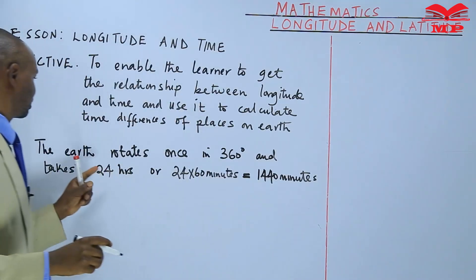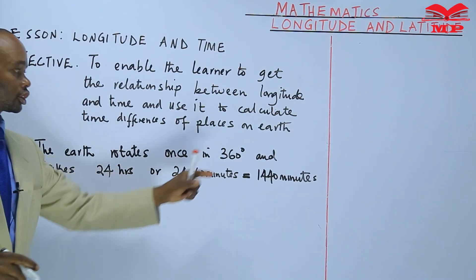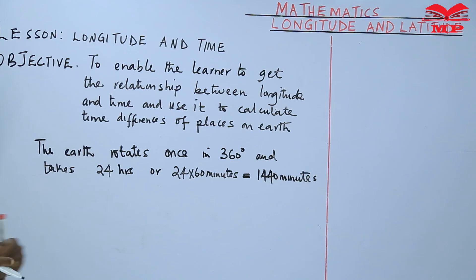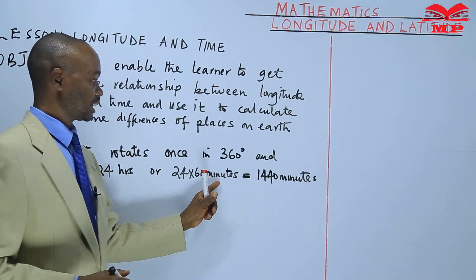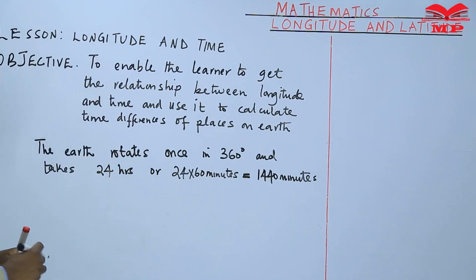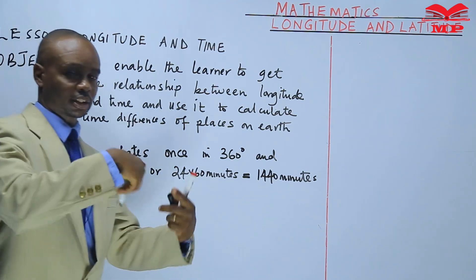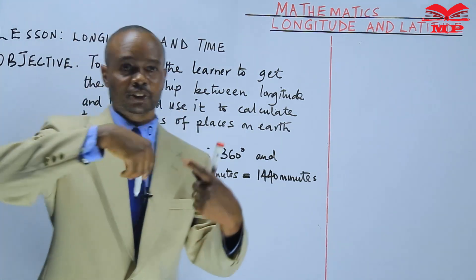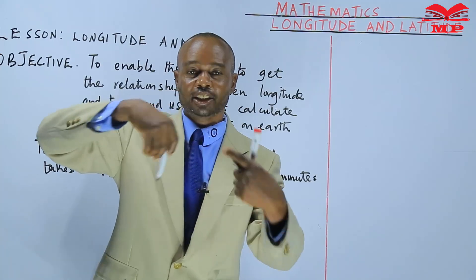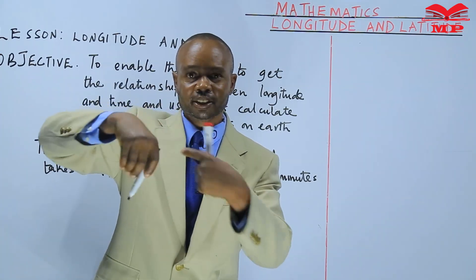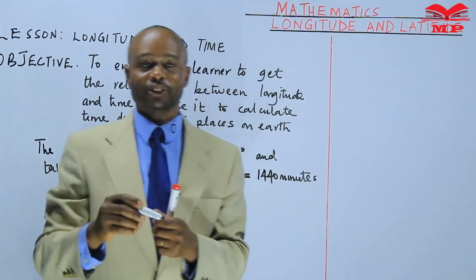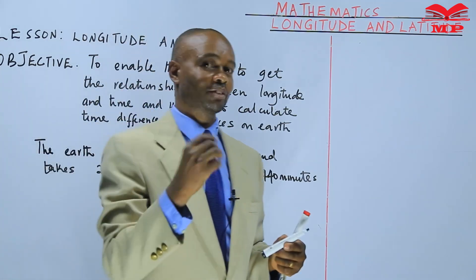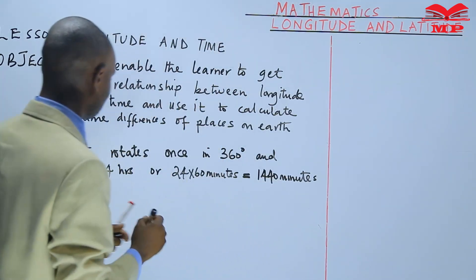The earth rotates once through 360 degrees, and one complete rotation takes 24 hours — that is 24 times 60 minutes, which gives 1440 minutes. As it rotates, it is making differences in longitude. Since we are dealing with longitude, time will be related to longitude.